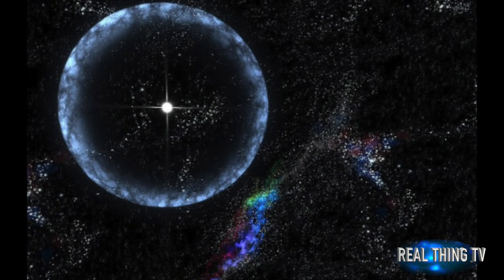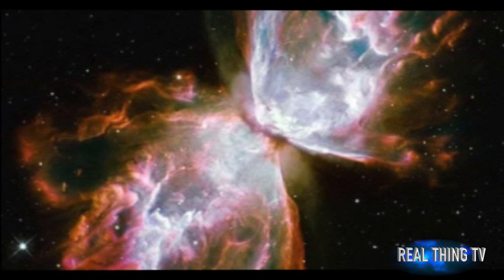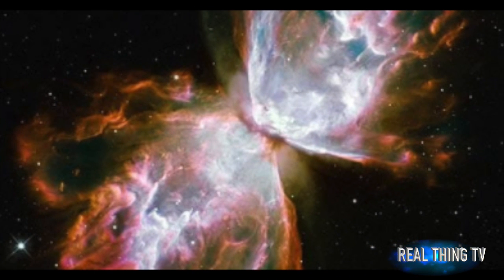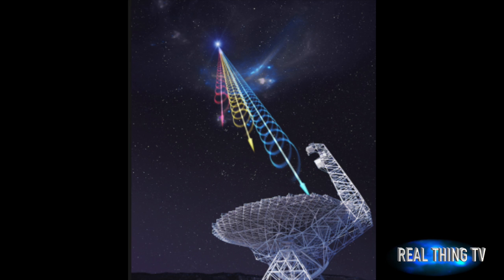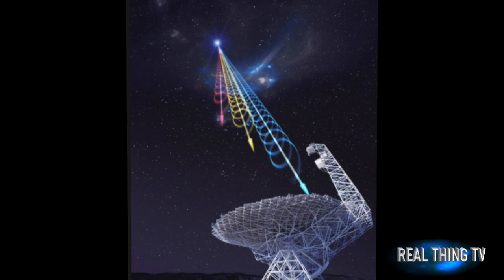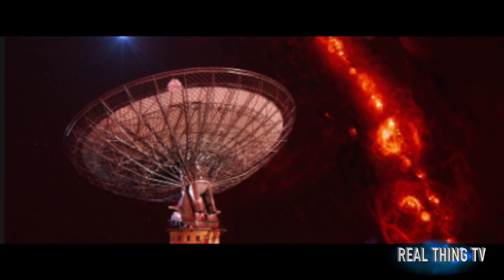This distant constellation could be trying to contact us. Six bursts of radio waves have been detected from the constellation Auriga, each lasting just a few milliseconds. While the source of the waves remains unknown, some suggest the mysterious bursts of energy could be a sign of alien life trying to contact us.